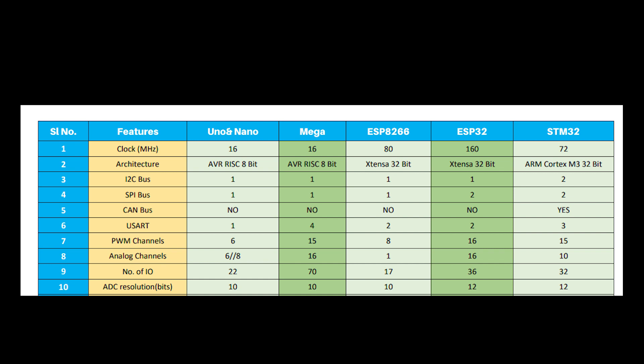Now we will talk about the resolution of input and output. For ADC (analog to digital converter) resolution: Uno, Nano, and Mega have 8-bit resolution. ESP8266 has 10-bit ADC resolution. ESP32 and STM32 both have 12-bit resolution in their analog to digital converters.